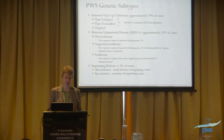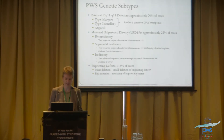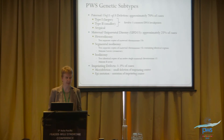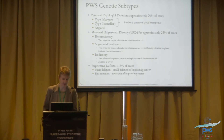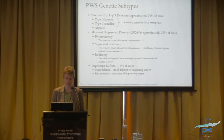In heterodisomy there are regions that are identical, and this results from a meiosis one error. Then isodisomy — you have two identical copies of the entire single maternal chromosome 15 — results from a meiosis two error. Finally, the third category, imprinting defects, seen in one to three percent of cases, can result from a micro-deletion or small deletion of the imprinting center, or an epimutation — a mutation in the imprinting center.